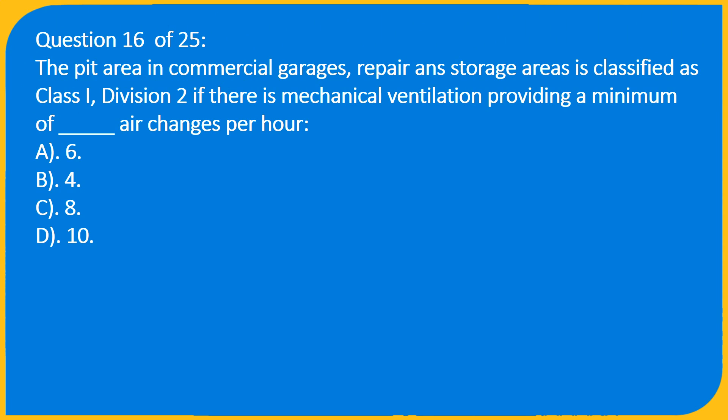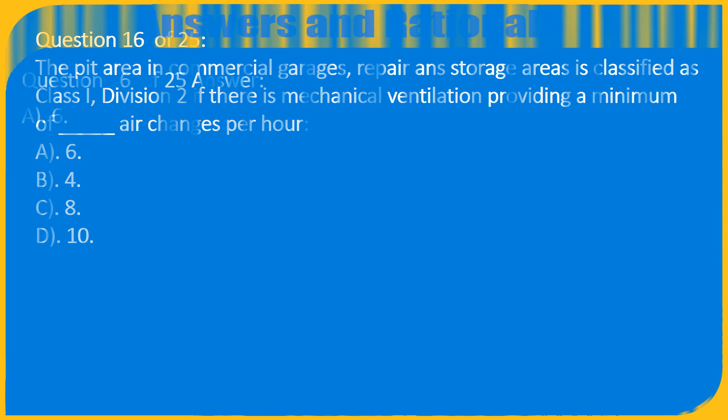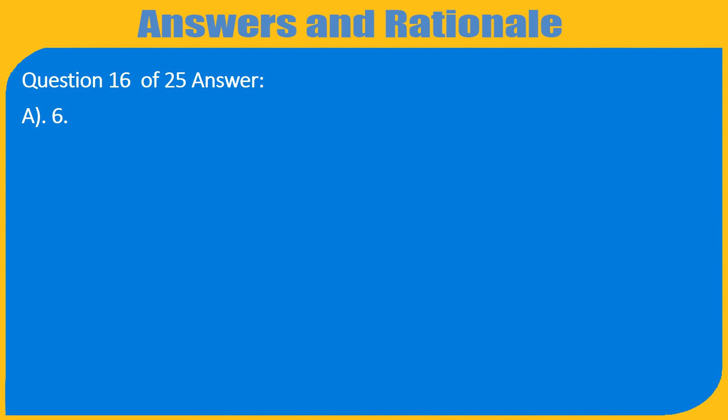Question 16 of 25: The pit area in commercial garages, repair and storage areas, is classified as Class I, Division 2 if there is mechanical ventilation providing a minimum of how many air changes per hour? A. 6, B. 4, C. 8, D. 10. Answer: A. 6.